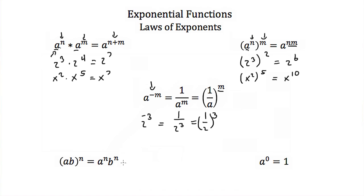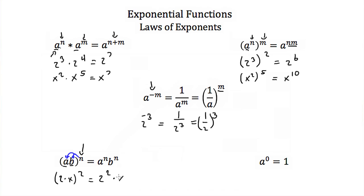The next law is the distributive property. If we have two numbers multiplied together and then put to a power, you can distribute that exponent to both of the numbers being multiplied. So a times b to the n power is equal to a to the n power times b to the n power. For example, 2 times x squared is equal to 2 squared times x squared.